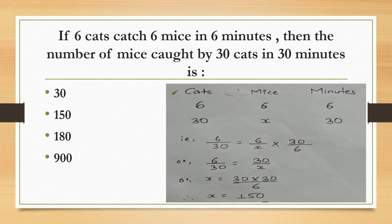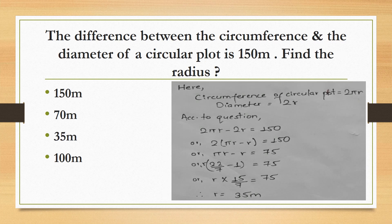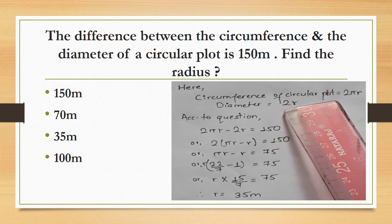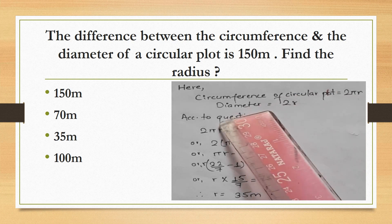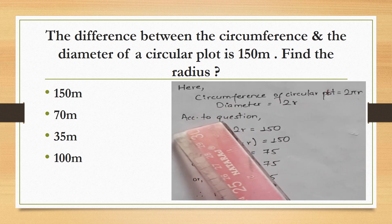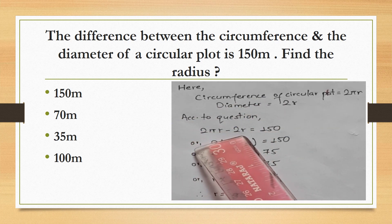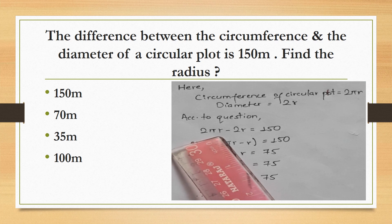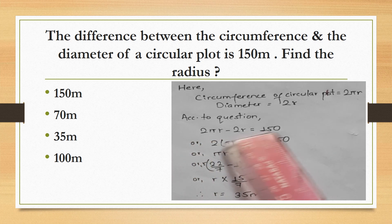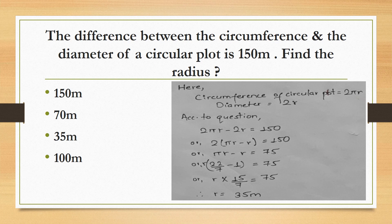The difference between the circumference and the diameter of a circular plot is 150 meters. Find the radius. The circumference formula is 2πr and the diameter is 2 times radius. According to the equation, circumference minus diameter equals 150, that is 2πr minus 2r equals 150. Solving for r, the radius is 35 meters.